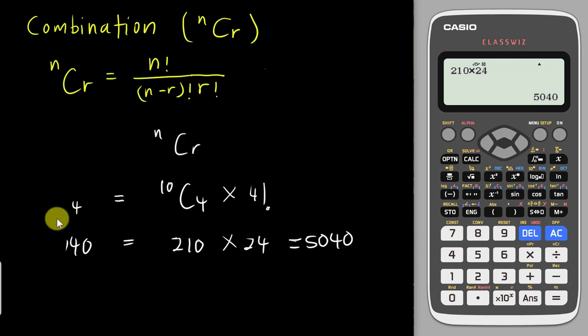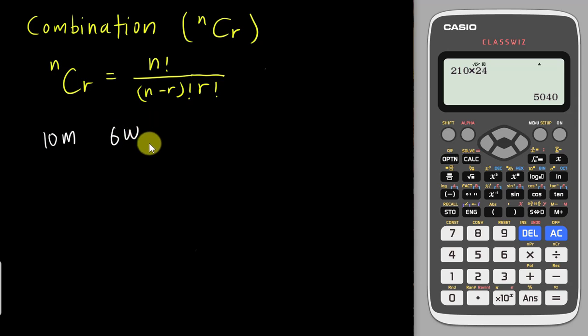When will we use combination? For example, let's say I have 10 men and 6 women. If I want to choose 2 men and 2 women to join the dance competition, I have 10 men, I want to choose any of the 2 men, which is 10C2, because I do not need to arrange these 2 men. At the same time, if I want to choose 2 women from the 6 women, it's 6C2.